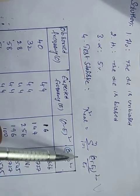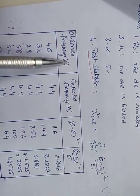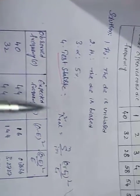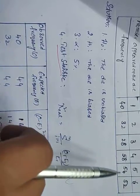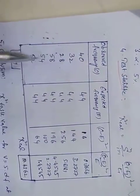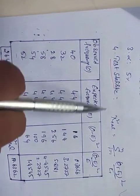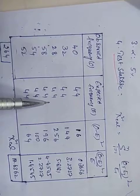Chi-square calculated equals the sum of (O minus E) squared divided by E. The observed frequencies are: 40, 32, 28, 58, 54, and the expected frequency follows from the distribution.